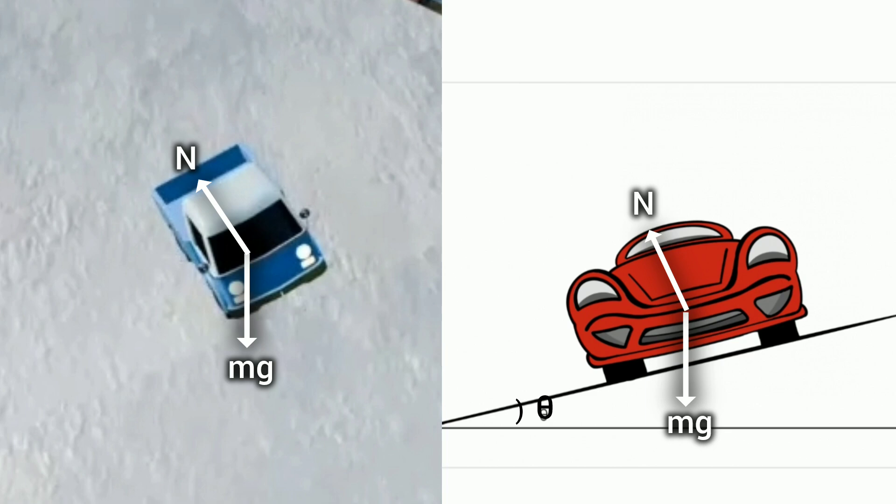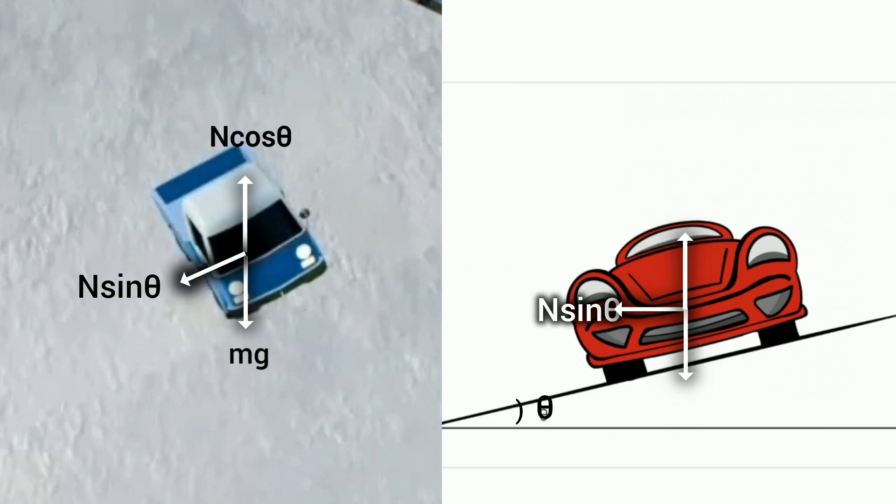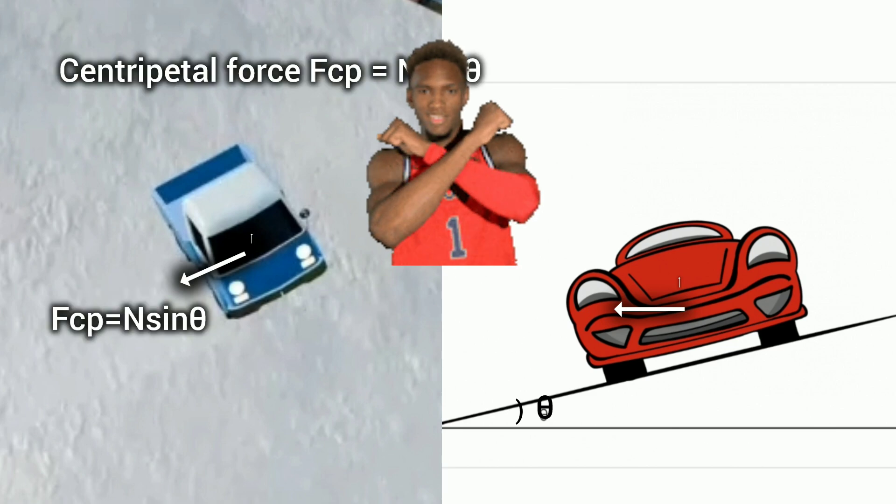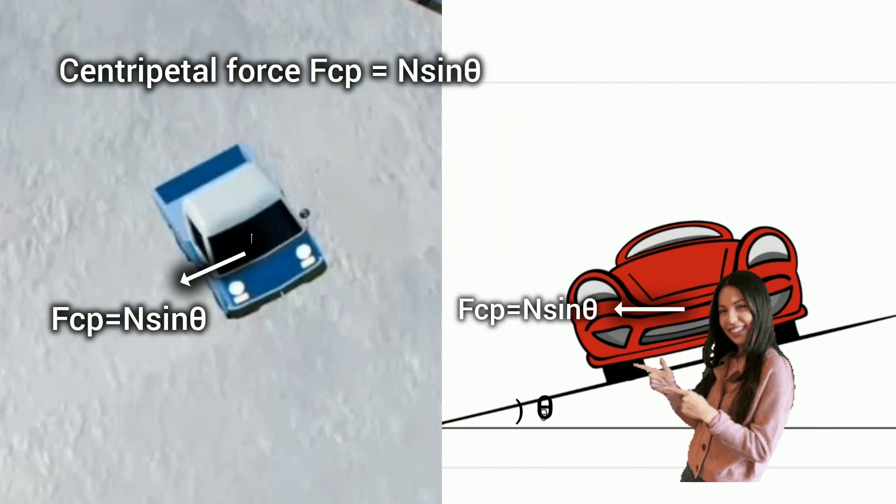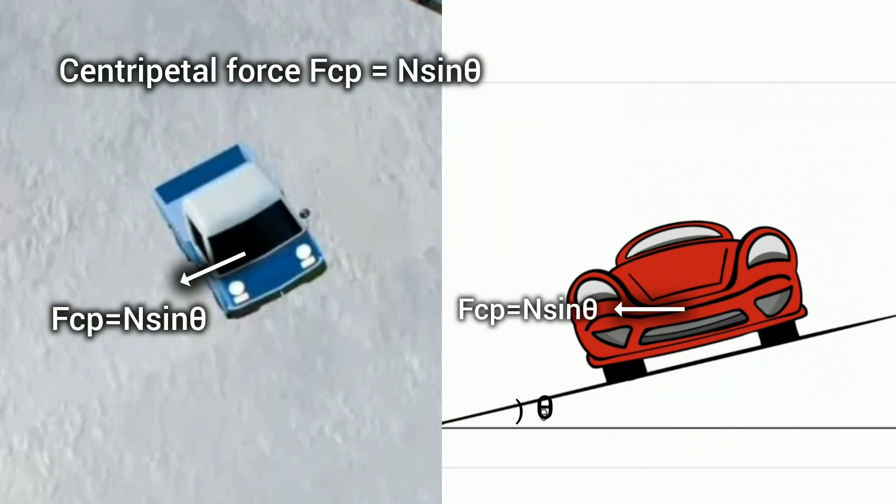We can split the normal force into two parts, one vertical and one horizontal. The vertical part cancels out the car's weight, leaving the horizontal part to provide the centripetal force needed for the turn.